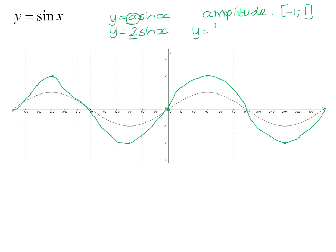If we were sketching the graph y equals a half sin x, we would decrease the amplitude. So instead of having a maximum point at 90° equal to 1, it would have a maximum point at one half. Instead of having a minimum point at negative 1, it would have a minimum point at negative one half, and the graph would look like that.